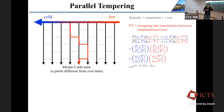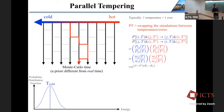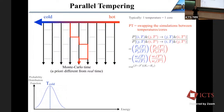Continuing with parallel tempering: to come back to the question of when does it fail — imagine you have a low temperature and this is the energy distribution. At a given temperature, the average energy is shown by a dashed line, and there is a Gaussian distribution of energy in the canonical ensemble. Now imagine you consider a higher temperature — the key question is whether the energy distributions of adjacent temperatures overlap sufficiently to allow efficient swapping between them.